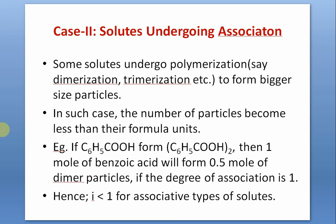Some solutes undergo polymerization — dimerization, trimerization — to form bigger particles. In such cases the number of particles becomes less than their formula units. For example, benzoic acid undergoes dimerization: one mole of benzoic acid will form 0.5 mol of dimer particles if the degree of association is 100%. So i = 0.5 for complete dimerization. i is always less than 1 for solutes undergoing association. For trimerization i = 1/3, for tetramerization i = 1/4 (at 100% association).